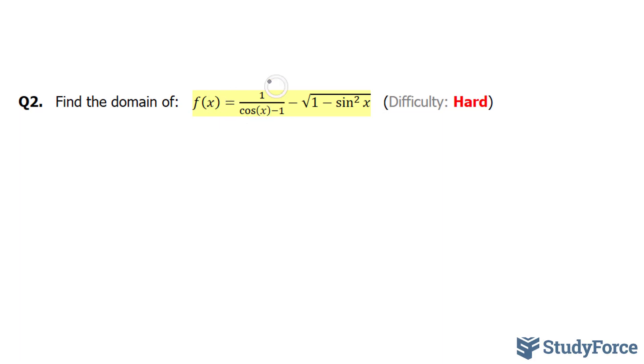So we're going to start off with this term right here. And remember, this cannot equal 0. So cos(x)-1 cannot equal 0. I'm going to solve for cos(x). cos(x) cannot equal positive 1. And if you recall, cosine goes from 1 to -1 all the way to 1. So therefore, x cannot equal 0 + 2nπ, where n represents any integer.